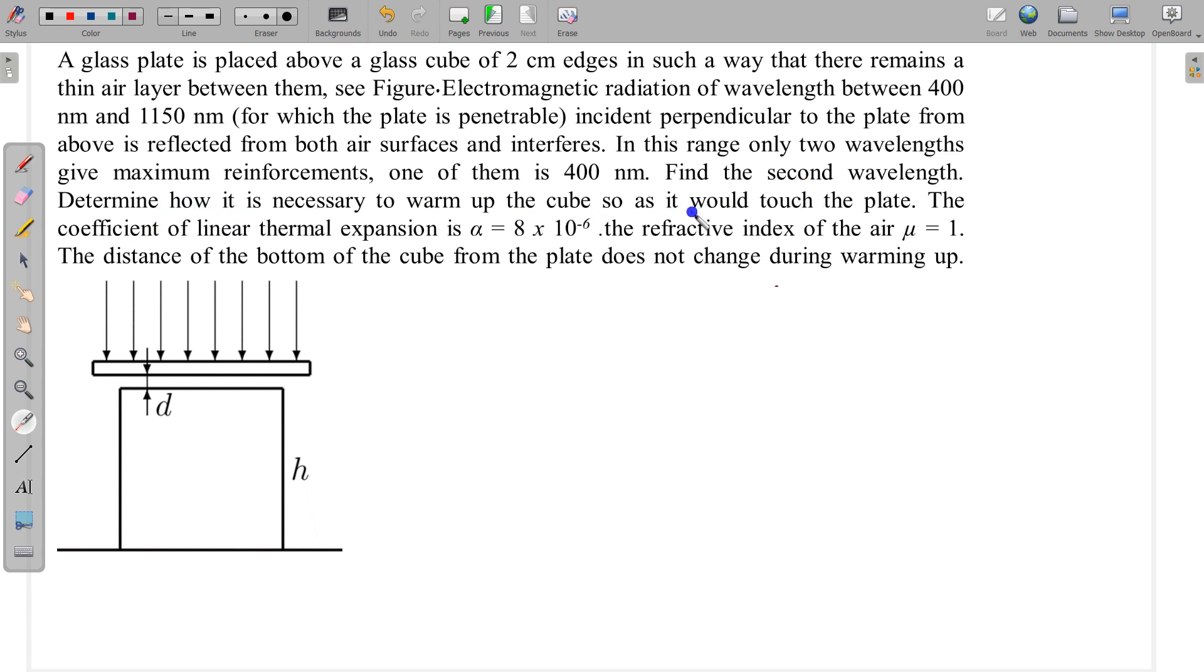And next, determine how it is necessary to warm up the cube so as it would touch the plate. The coefficient of linear thermal expansion is α = 8 × 10⁻⁶, the refractive index of air μ is equal to 1. The distance of the bottom of the cube from the plate does not change. So this distance is not changing with the change in temperature. So let us first concentrate on this wave optics part of this problem. From that part we have to find this D and from D we can find the rise in temperature. So we have to find rise in temperature and for that we have to find D.